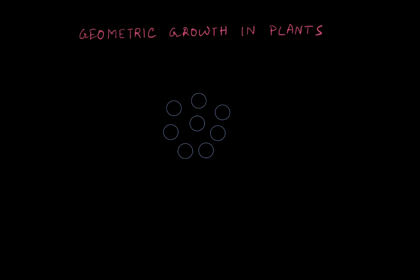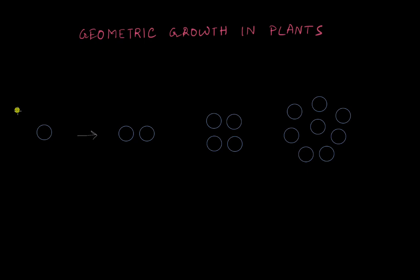If you notice, every time the bacteria are dividing, the number of cells added is increasing. We start off with one cell, and then one is added the first time it divides to get two cells. Then two cells are added to form four cells, and then four cells are added. So each time the bacteria divide, the number of cells added keeps increasing — this is typically what happens in geometric growth.